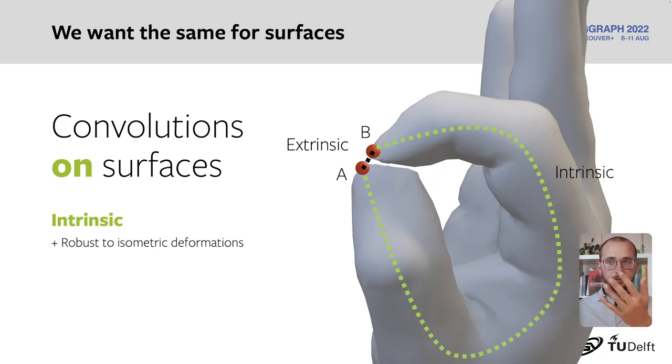Examples are moving your fingers, your arms, or your legs. In reality, such deformations aren't purely isometric, but an intrinsic convolution would be much more suited to such deformations than an extrinsic one.